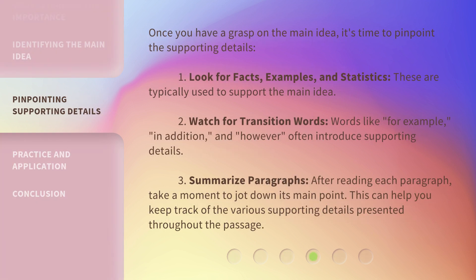Once you have a grasp on the main idea, it's time to pinpoint the supporting details. First, look for facts, examples, and statistics — these are typically used to support the main idea. Second, watch for transition words like 'for example,' 'in addition,' and 'however,' which often introduce supporting details. Third, summarize paragraphs: after reading each paragraph, take a moment to jot down its main point to help you keep track of the various supporting details presented throughout the passage.